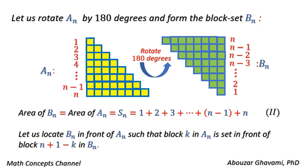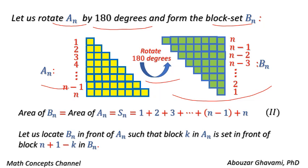Let us rotate An by 180 degrees and form the block set Bn. Bn is the rotated format of An, thus the area of Bn equals the area of An, and the area of An equals Sn. Let us locate Bn in front of An such that block k in An is set in front of block n plus 1 minus k in Bn, where k varies from 1 to n.